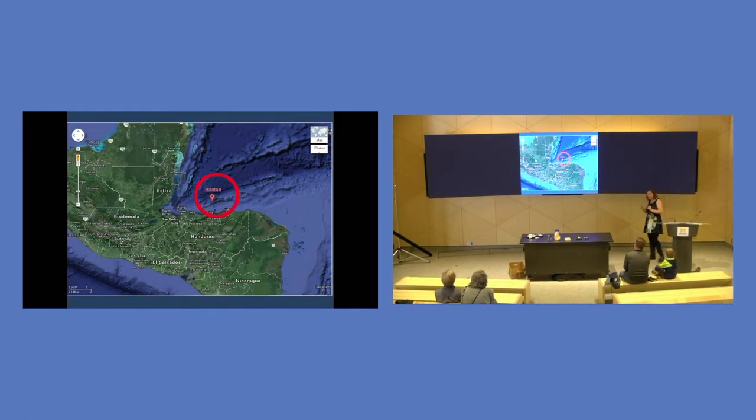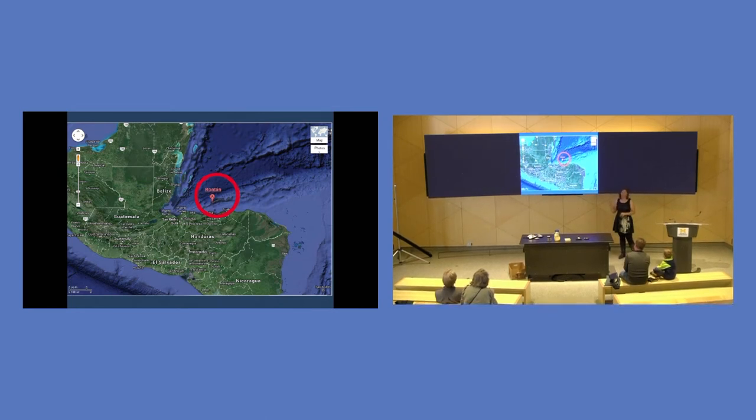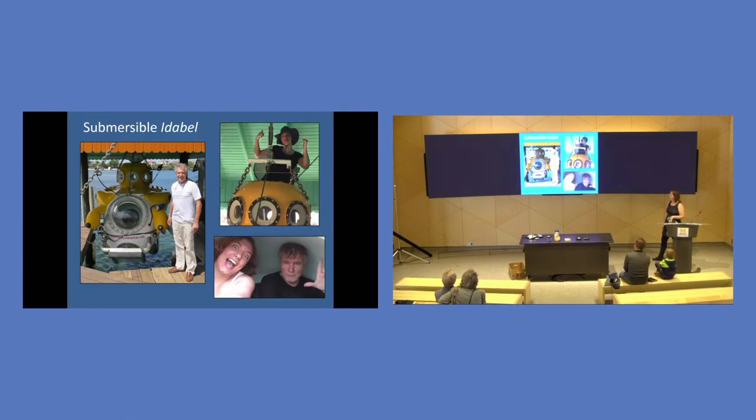The other thing that's really important about these guys is they are found off of Roatan, Honduras. This is a little island out there. It's very beautiful. I recommend if you're looking for a snorkel or dive vacation, it's great to go to. They have a great reef protection program. There's nothing else to do on the island. It's basically a dive resort, but they really do protect their reefs there. So it's lovely for snorkeling. And most importantly for me is the submersible Idabel.